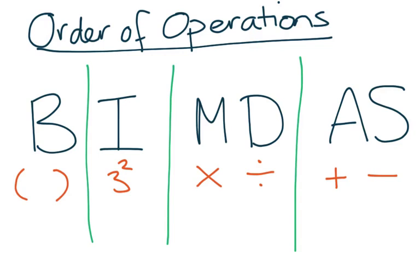Here in Australia we tend to use it as BIMDAS and it stands for brackets, indices, multiplication, division, addition and subtraction. You'll see here that I've split them into sections.